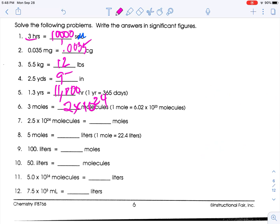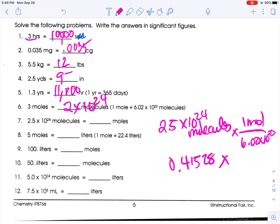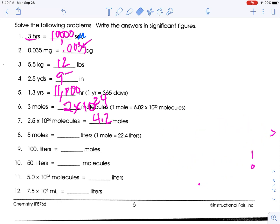Now we have to go back. 2.5 times 10 to the 24th molecules. We do one mole on top, 6.02 times 10 to the 23rd. So 2.5 divided by 6.02 is 0.41528, and 10 to the 24th divided by 10 to the 23rd is 10 to the 1. That's not in scientific notation, so I'm going to have 4.1528 times 10 to the 0, which is 1. I need two sig figs: 4.2, because this rounds this up.